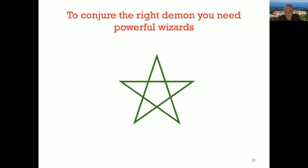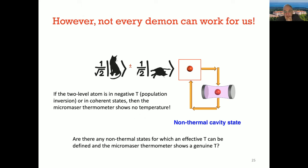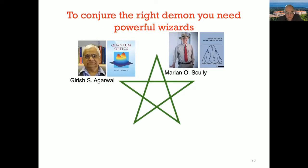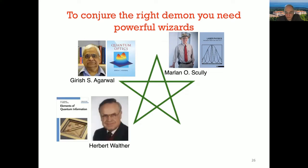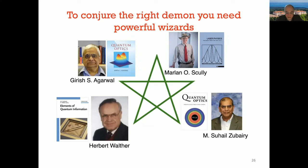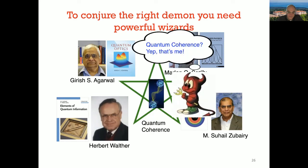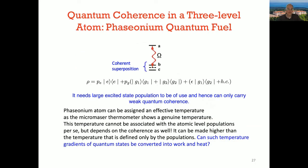Clever people found a way to have a thermal state of the cavity while still having some coherences in the atom. Scully and co-workers — Agarwal, Walther, and Zubairy — designed an atomic state that can thermalize the cavity, keep it in the blackbody regime, and still enjoy quantum coherence.